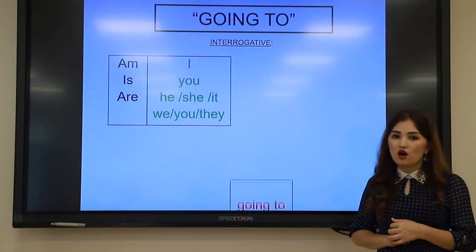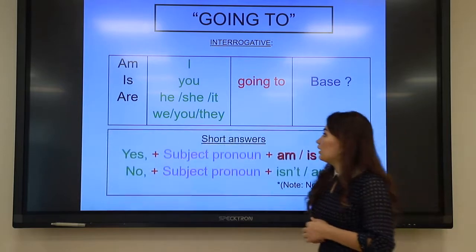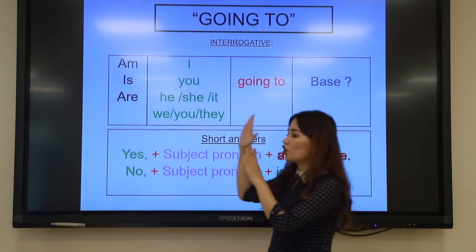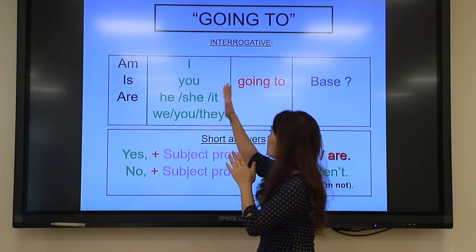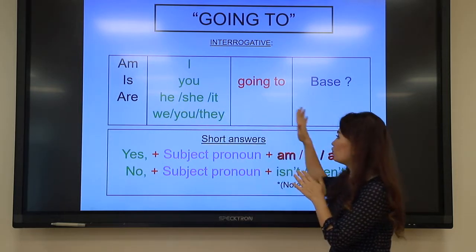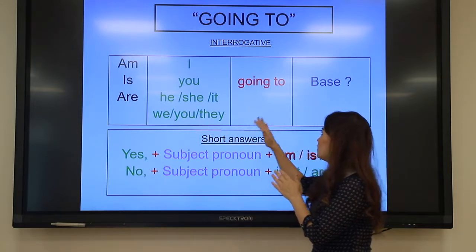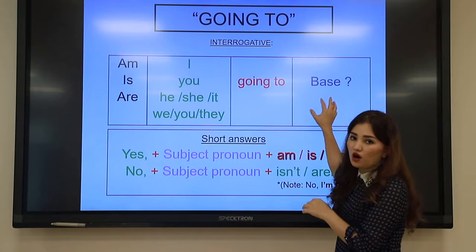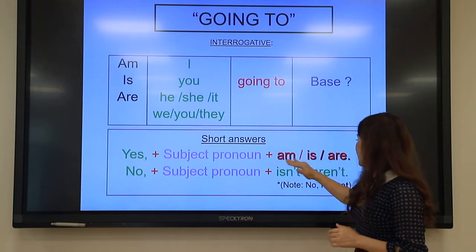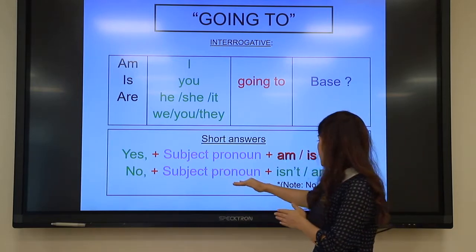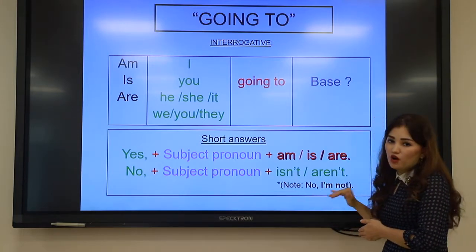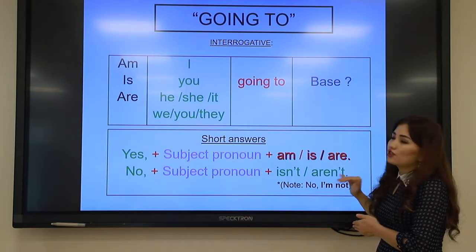The interrogative form of 'to be going to': Am I going to? Is she / he / it going to? Are we / you / they going to? Plus the base form of the verb. Short answers: Yes, subject pronoun + am/is/are. No, subject pronoun + isn't/aren't.